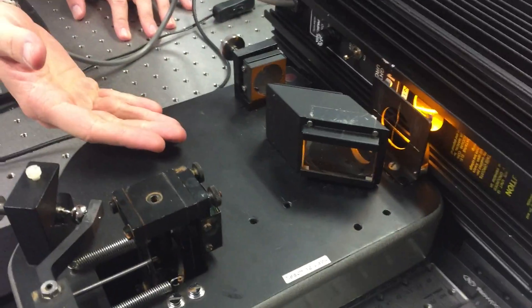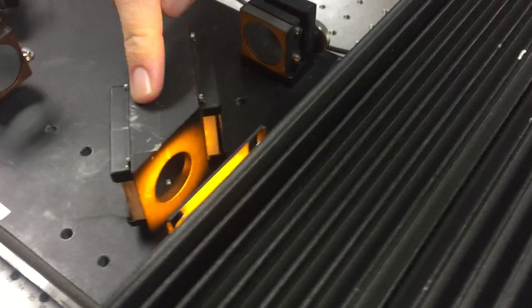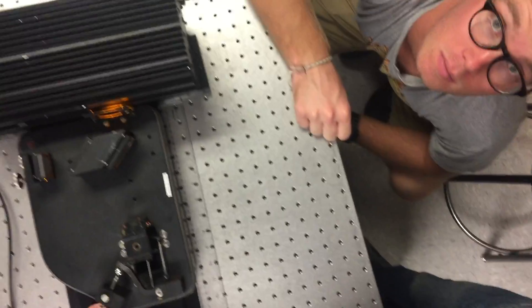This is our setup for the sodium source. The sodium source comes in here, reflects off this mirror, bounces through the beam splitter. Another reflection back through here. We are looking for the fringe pattern.